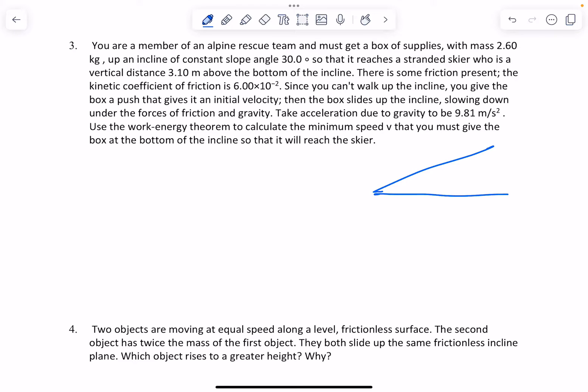So I've got an angle, a slope, and we know the height of the slope. What was it? 3.10 meters. That's the height, that's this number. And we've got a box of supplies.